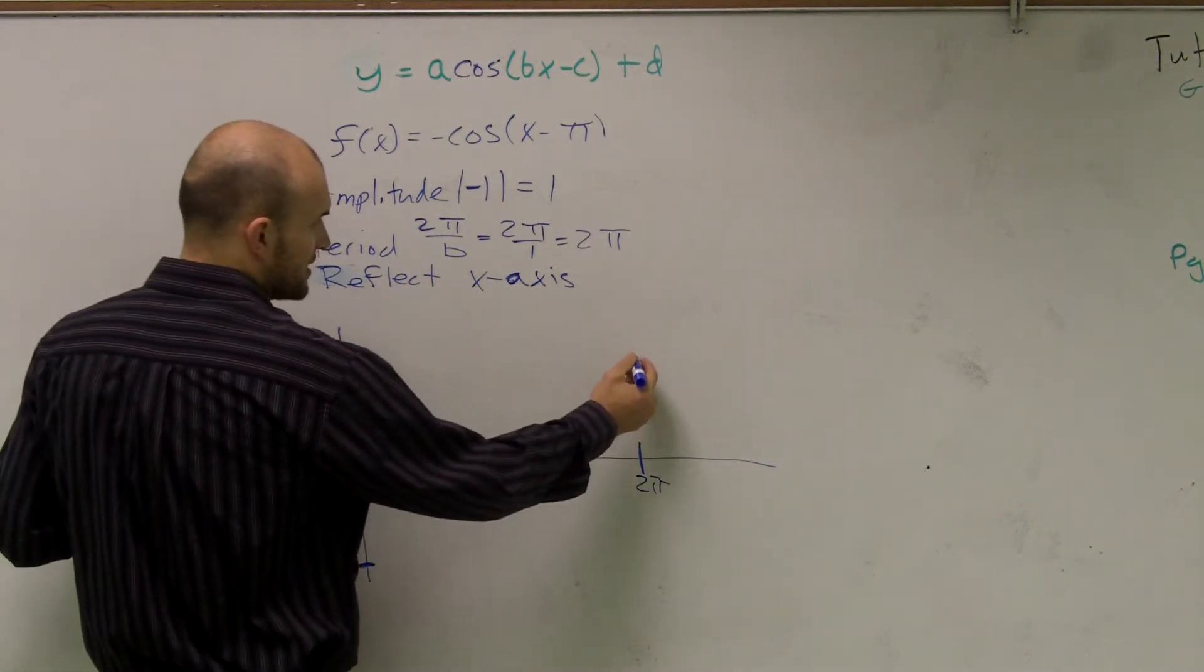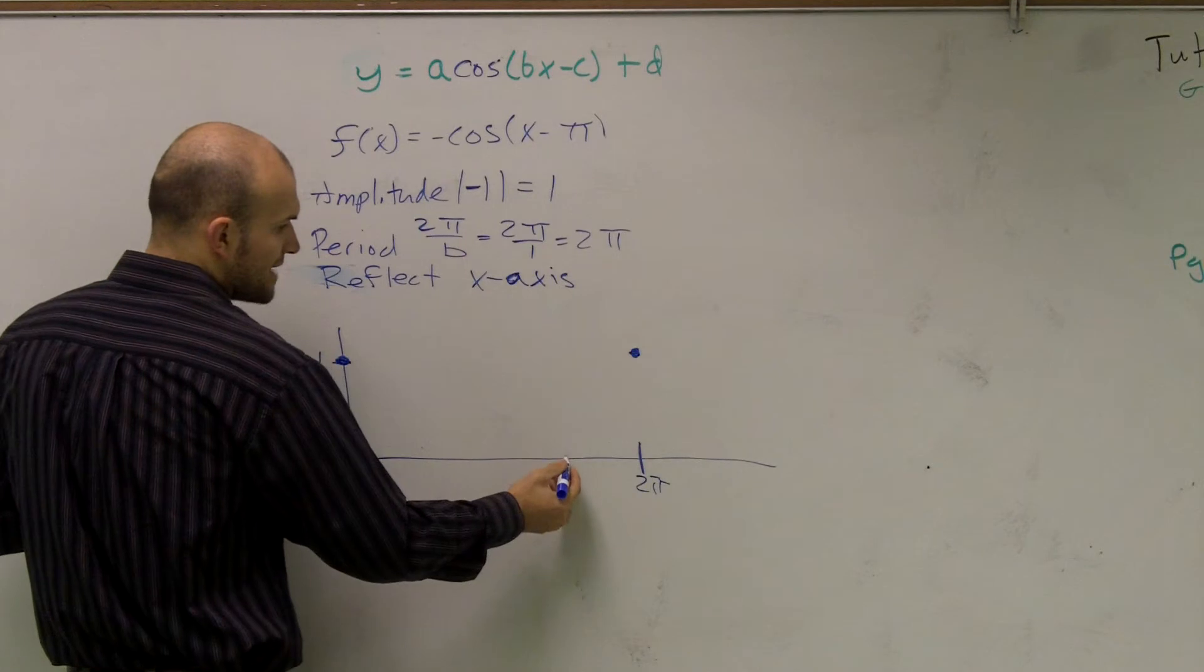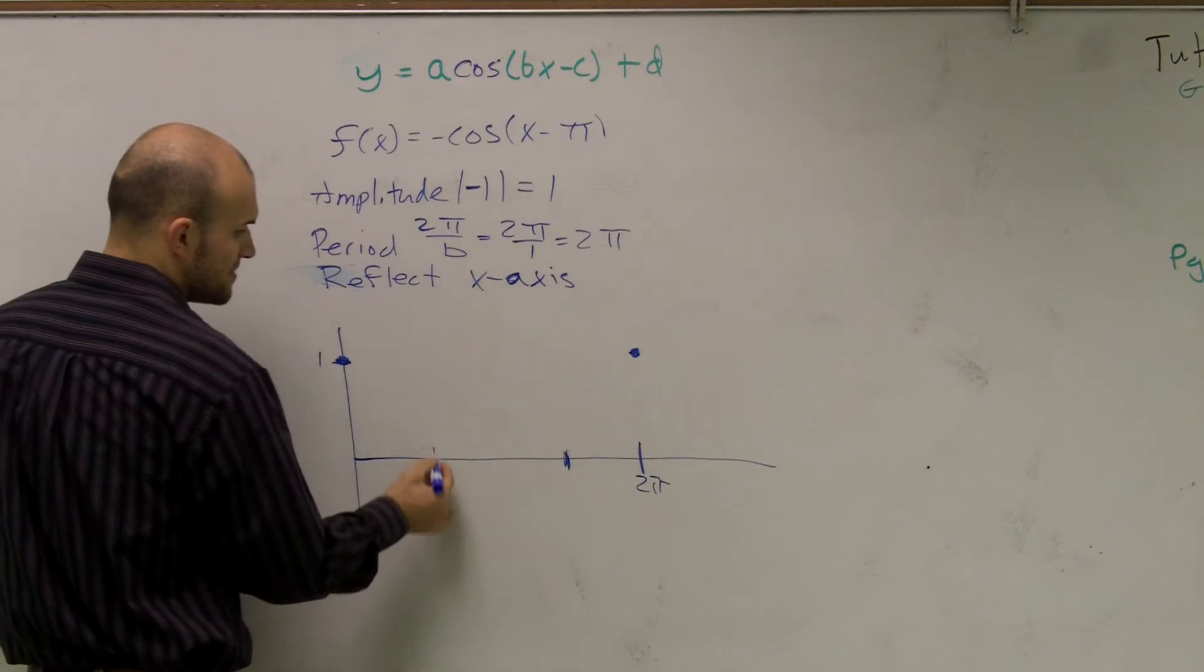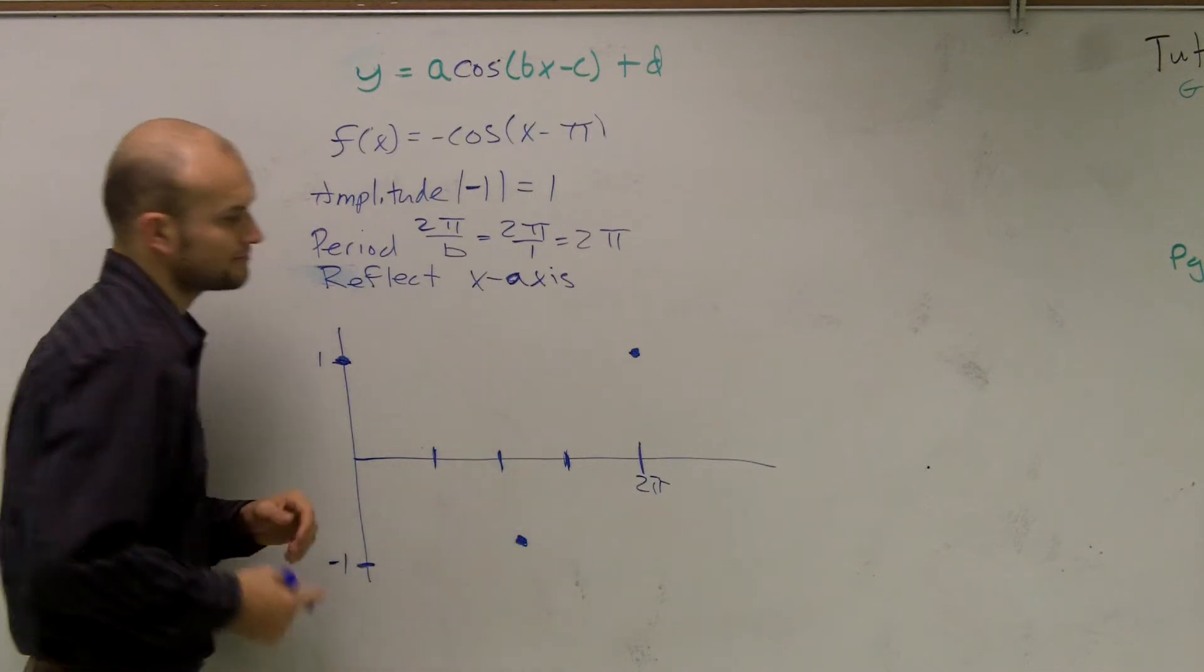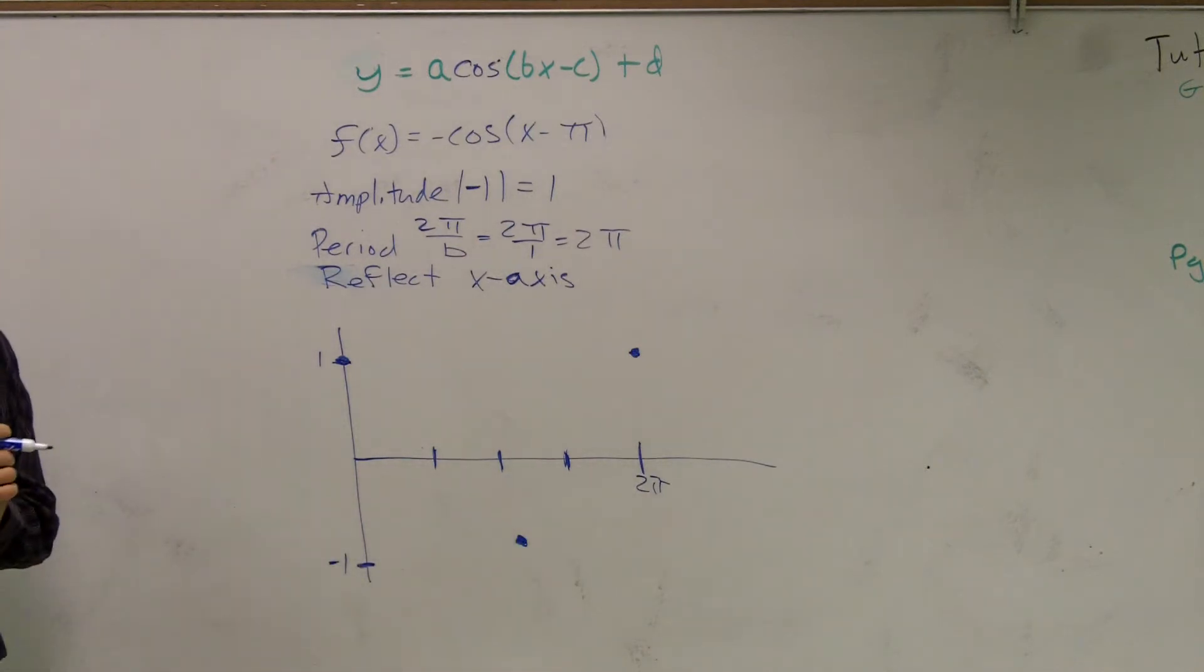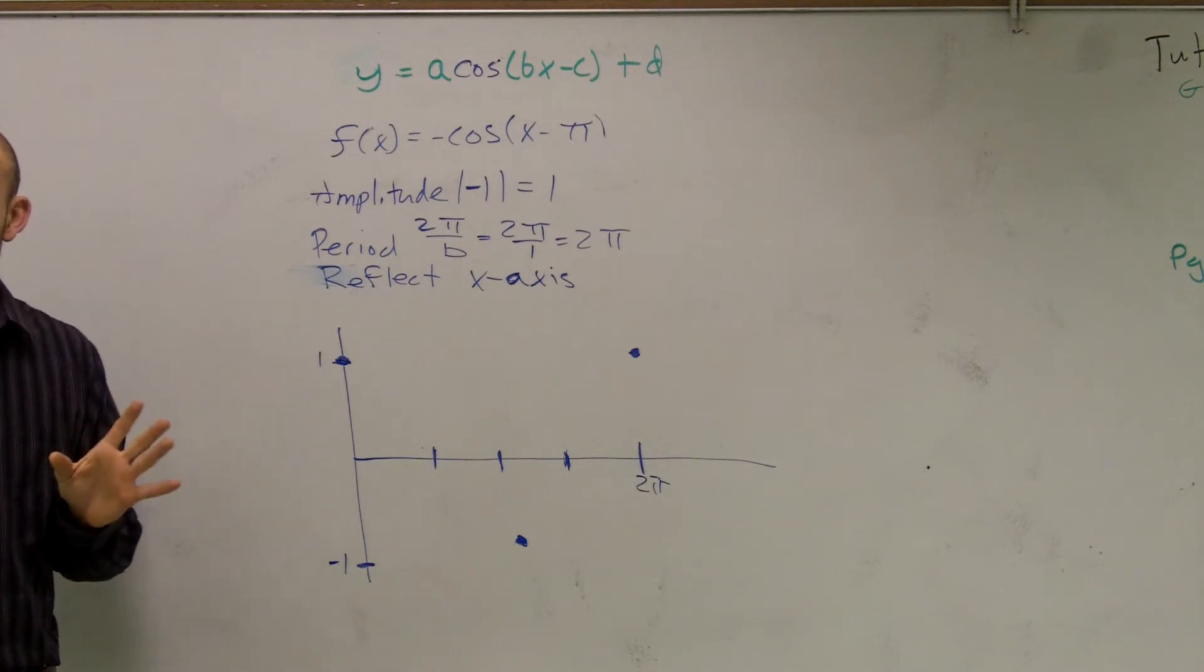So it's going to end its cycle up here. Then I'm going to have two intercepts and I'm going to have a minimum point. Now I'm just going to draw exactly what the first, like the parent graph looks like, so you guys can remember.